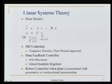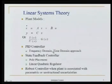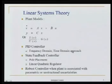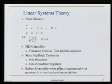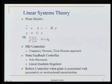As far as transfer functions are concerned, industrial controllers normally use a PID controller, designed either using a frequency domain approach or time domain approach — for example, root locus in time domain, or Bode plot and Nyquist diagram in frequency domain. For state feedback controllers, there is pole placement and the linear quadratic regulator, which is optimal control. There is also robust control, used when plant models are not exact — they are inexact.